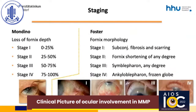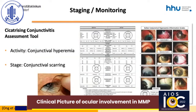Apart from Foster's, the Mondino staging system is regularly used, based on the loss of inferior fornix depth. There are several other clinical scoring systems for MMP with ocular involvement, but there is no consensus on which is best to use. All systems so far are limited by the lack of direct correlation with disease progression, and therefore no system can be used to predict need for immunosuppression. The cicatrizing conjunctivitis assessment tool published by Ong tries to implement staging as well as activity, combining clinical parameters from Foster staging with quantification of the fornix depth and conjunctival hyperemia as a surrogate for inflammation. We think it has advantages over other systems and use it in our clinic.